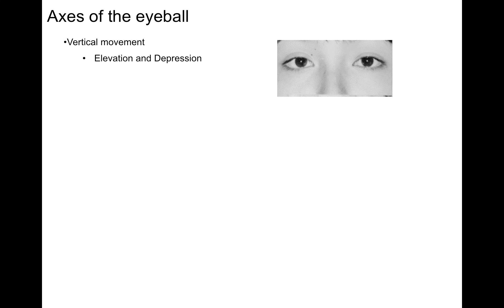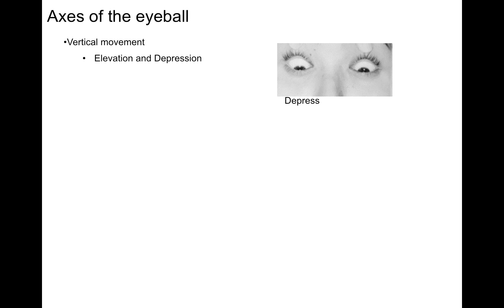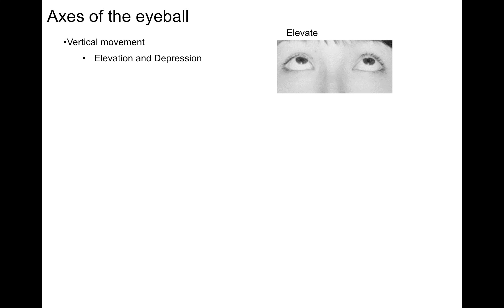Next, we have vertical movement, going up and down in a vertical plane — elevation and depression. The eyeball can look up, or elevation in the y-axis, or down, depressed in the y-axis. Up, down — elevation and depression.